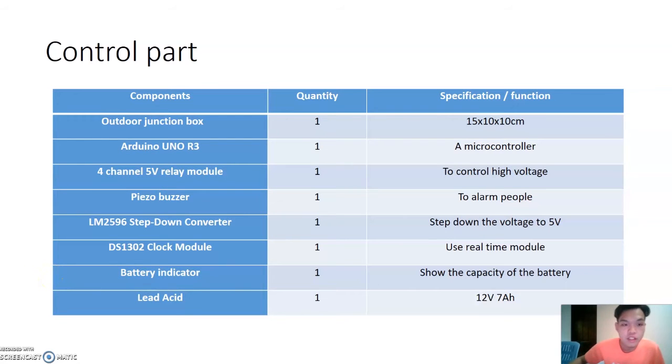So now I will present the control part. The control part is made up of few components. First is the outdoor junction box, having a 50x10x10cm dimension. This box contains the controller which is Arduino Uno R3, 4 channel 5V relay module, buzzers, and 5V voltage regulator circuit. This box is made by PVC, so it is corrosion proof and waterproof. It can prevent water entering and destroying the Arduino and relays inside.